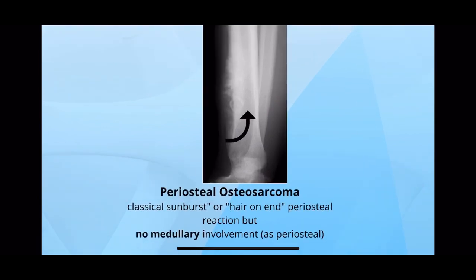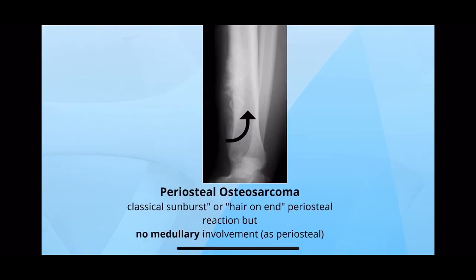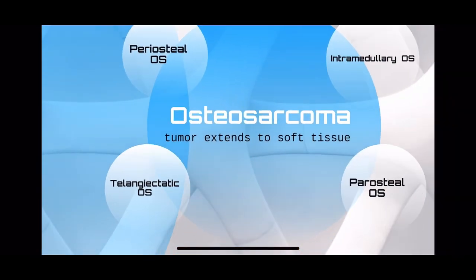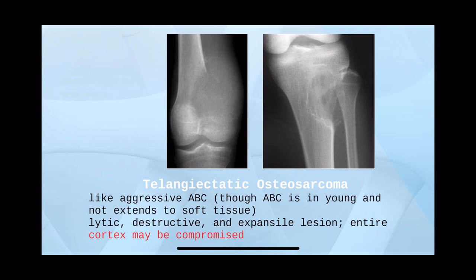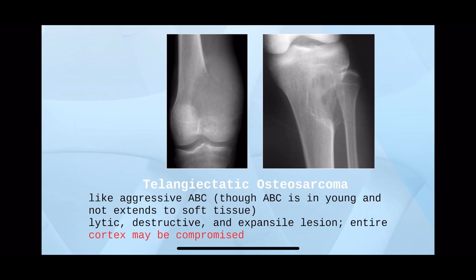The periosteal osteosarcoma arises from the periosteum. The medullary cavity is not involved. So if you see a malignant lesion extending into the soft tissue with a hair-on-end pattern but without involvement of the medullary canal, it is periosteal osteosarcoma. For telangiectatic osteosarcoma, there is a cyst, but here the cyst has invaded the cortex and gone into the soft tissue — something like an aggressive ABC look.